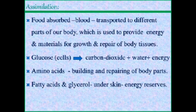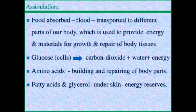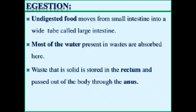The absorbed food — already absorbed nutrients — are transported through the blood to different parts of the body, providing energy, helping in growth, repair, and building. Glucose goes through respiration to produce carbon dioxide, water, and energy. Amino acids help in building and repairing. Fatty acids and glycerol help in reserving energy.